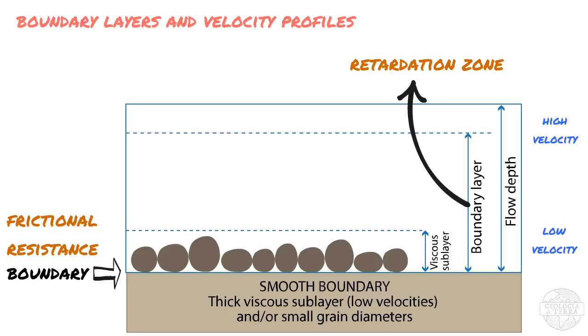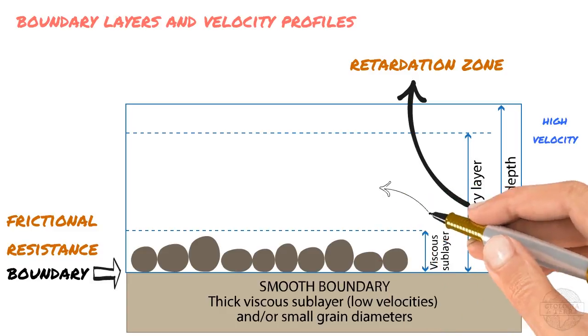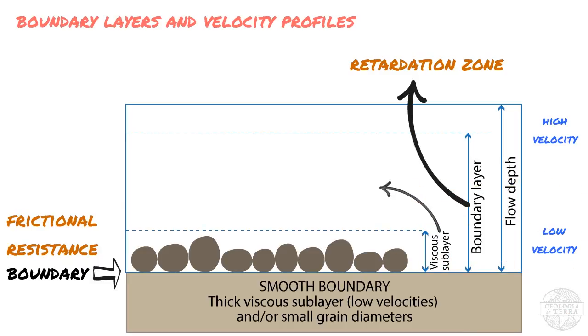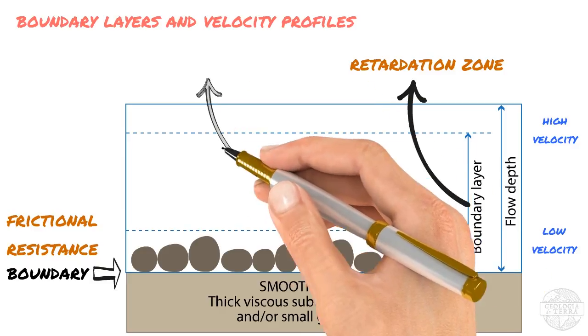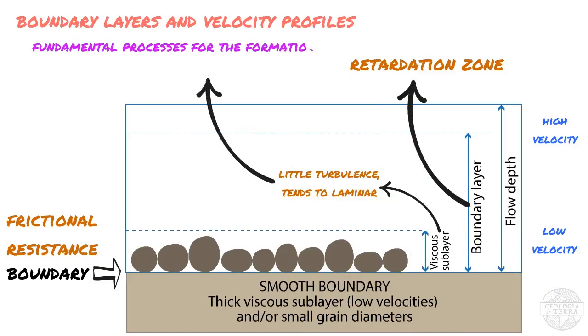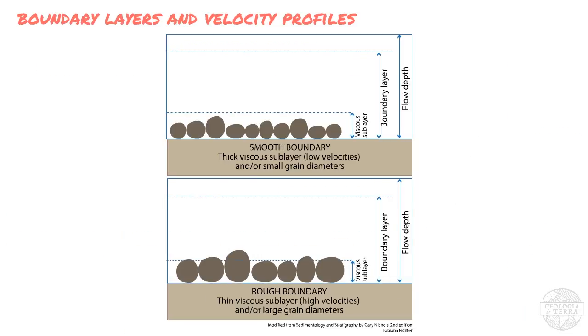Now, within the boundary layer, there is a sublayer called viscous sublayer, located immediately on top of the bed surface. This is a region of decreased turbulence that tends toward laminar flow. Processes occurring within the viscous sublayer and the effects of rough and smooth surfaces are fundamental to the formation of different bed forms.